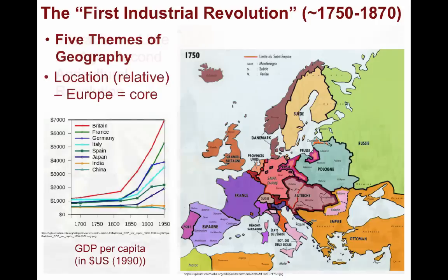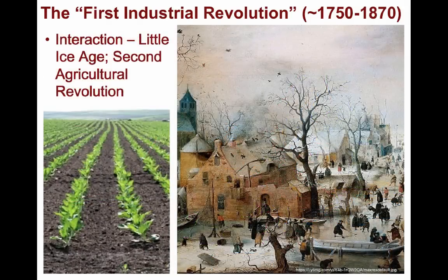As far as human-environmental interaction, the colder temperatures that affected the globe due to the Little Ice Age had pushed Europe into the Second Agricultural Revolution, in which many machines were devised to replace human and animal labor. This started the process of mechanization that would be taken to a greater scale through the First Industrial Revolution.